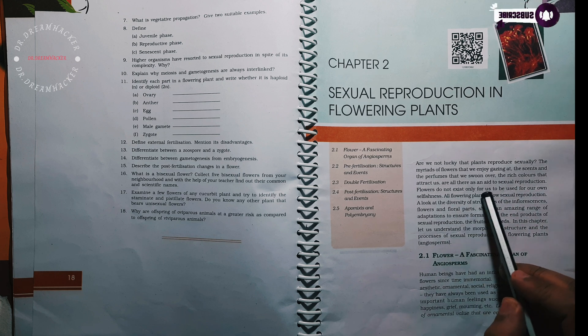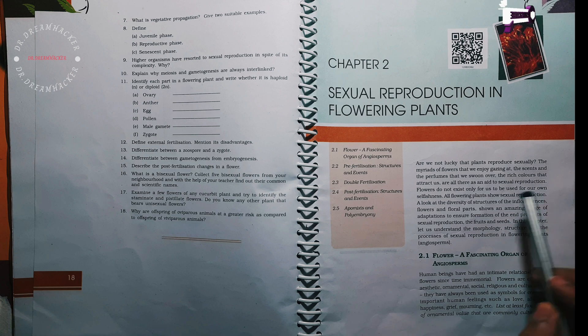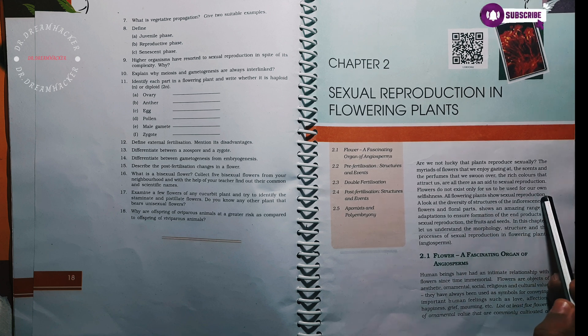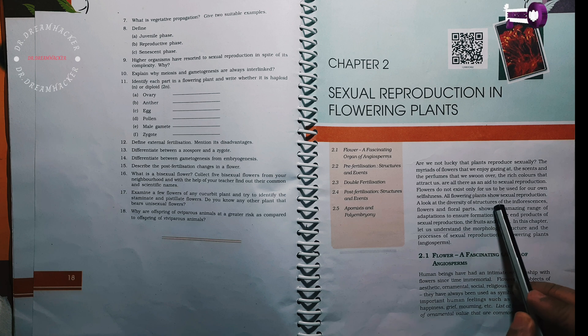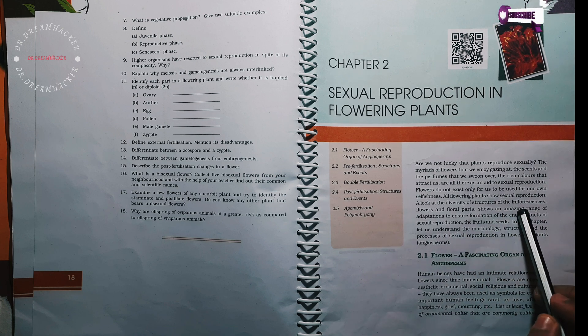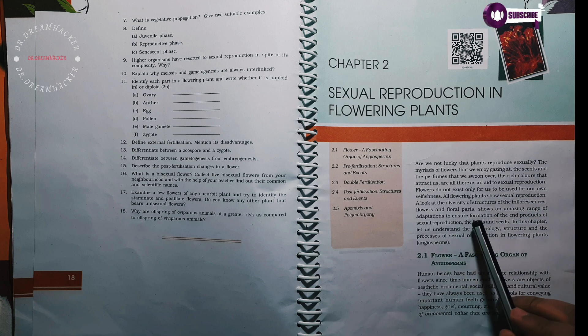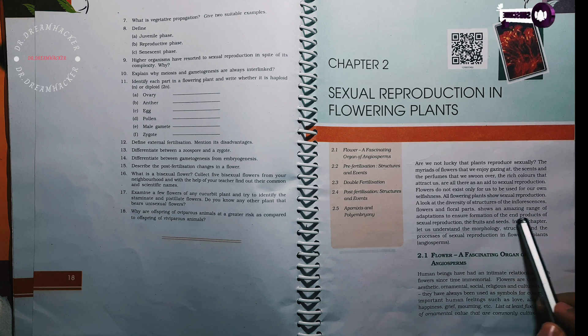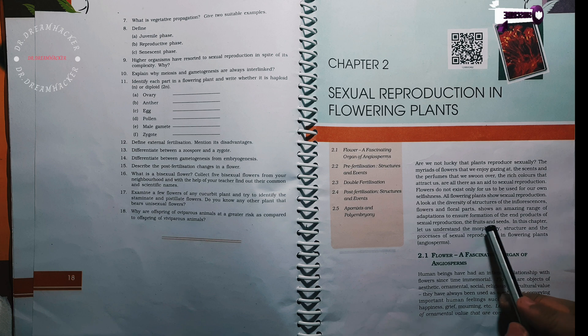Flowers do not exist only for us to be used for our own selfishness. All flowering plants show sexual reproduction. A look at the diversity of structure of the inflorescence, flowers and floral parts shows an amazing range of adaptations to ensure formation of the end products of sexual reproduction, the fruits and the seeds.